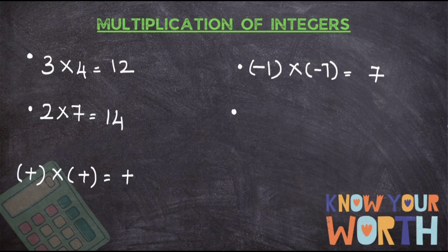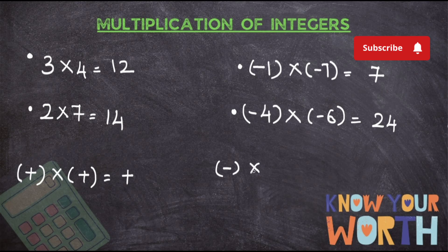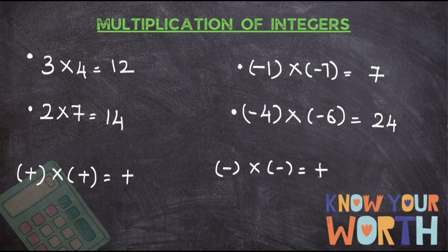I will take one more example: minus four into minus six. First ignore the sign. Both are negative, so minus times minus will become plus. Go ahead and multiply: four sixes are 24, and minus times minus means positive. That is why the answer will be plus 24. The rule says: when you multiply two negative numbers, the answer will be a positive number.